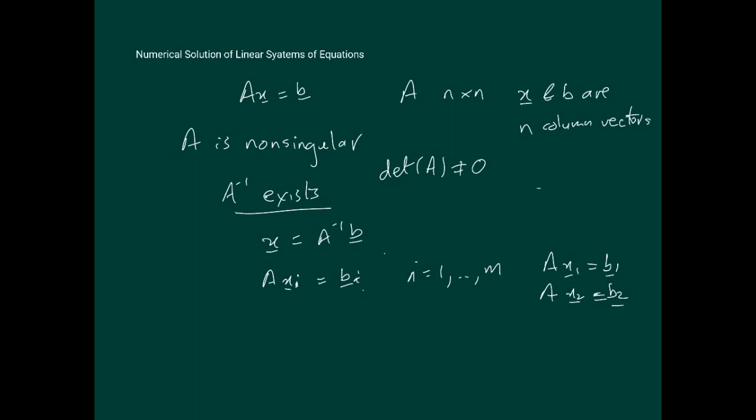So it's a matter of just calculating A inverse times b1, A inverse times b2. We still warn against using this, although it may seem attractive, but it has lots and lots of problems